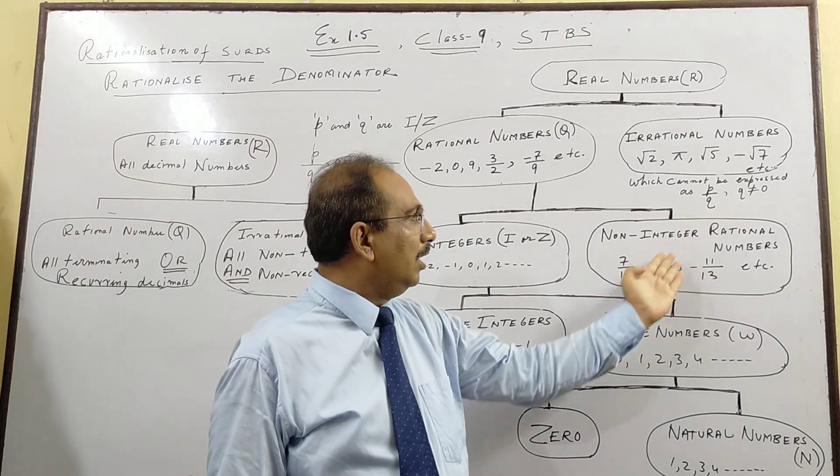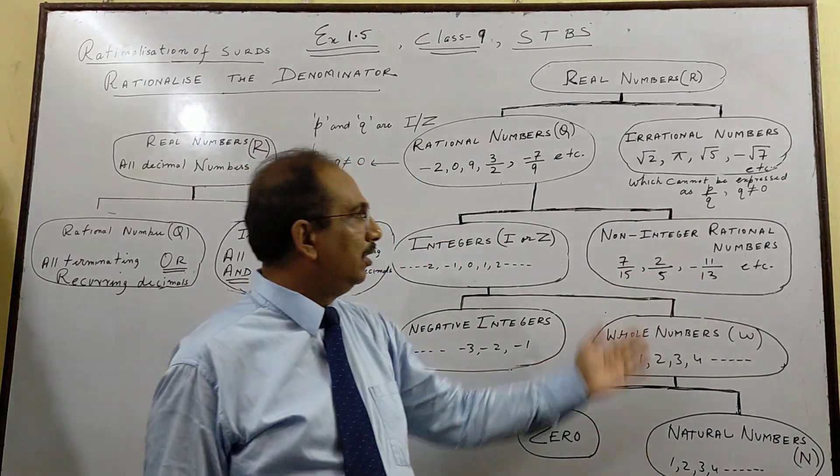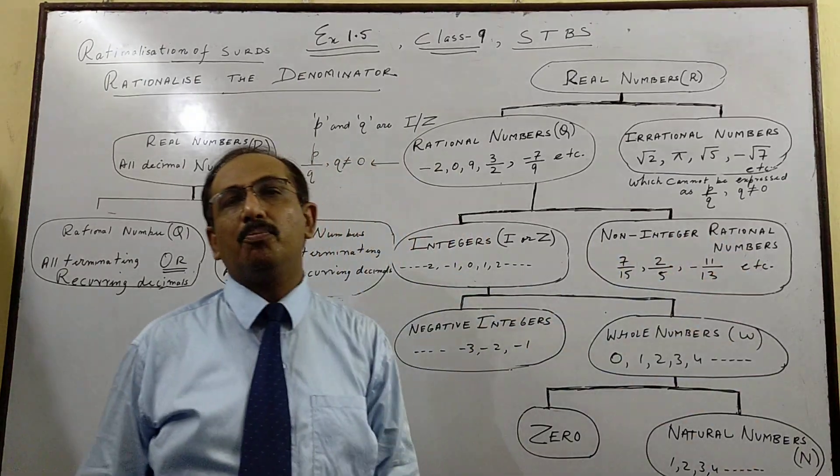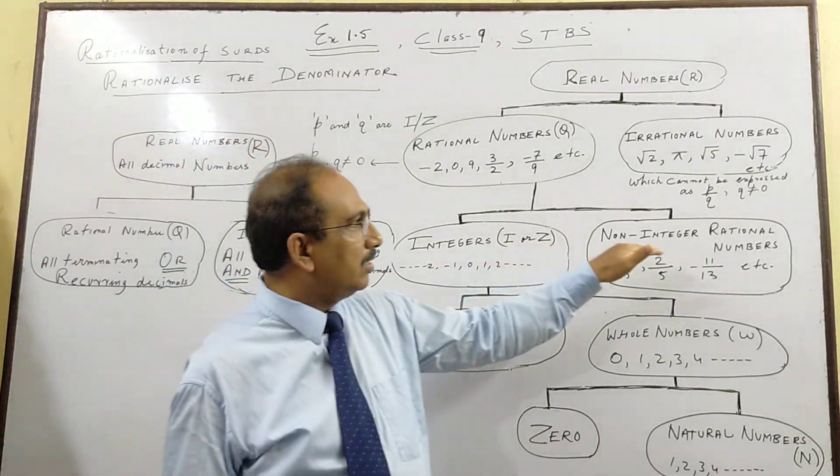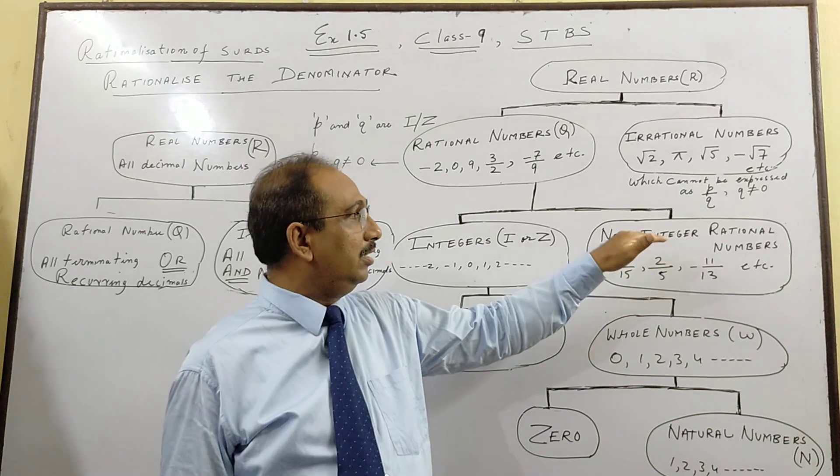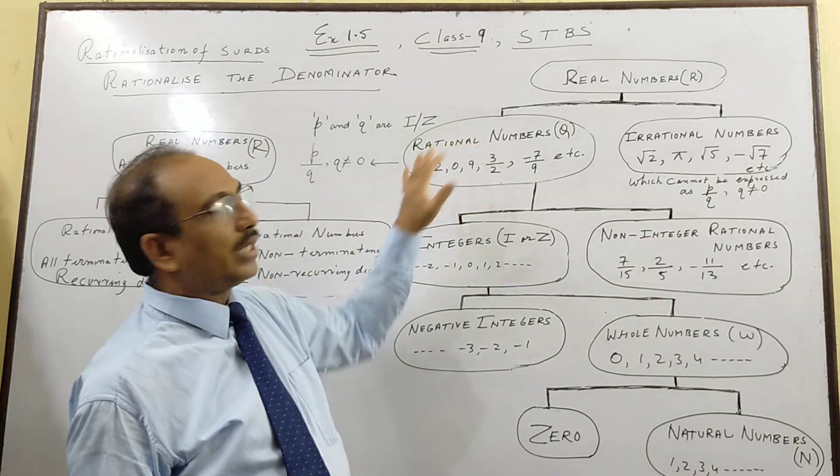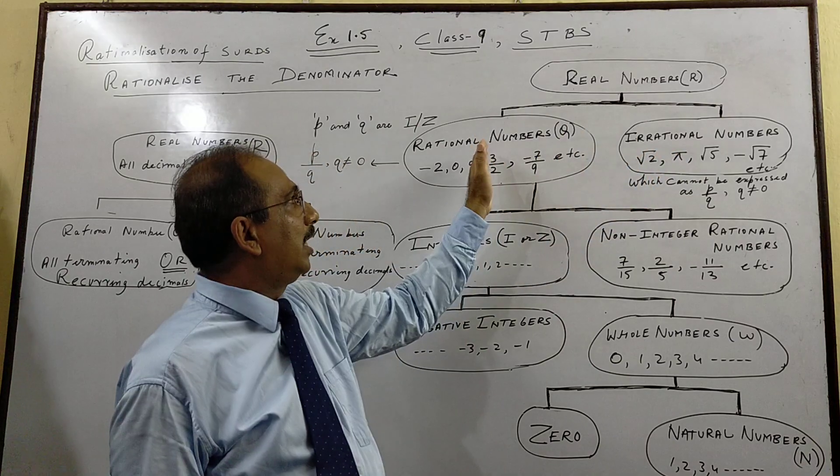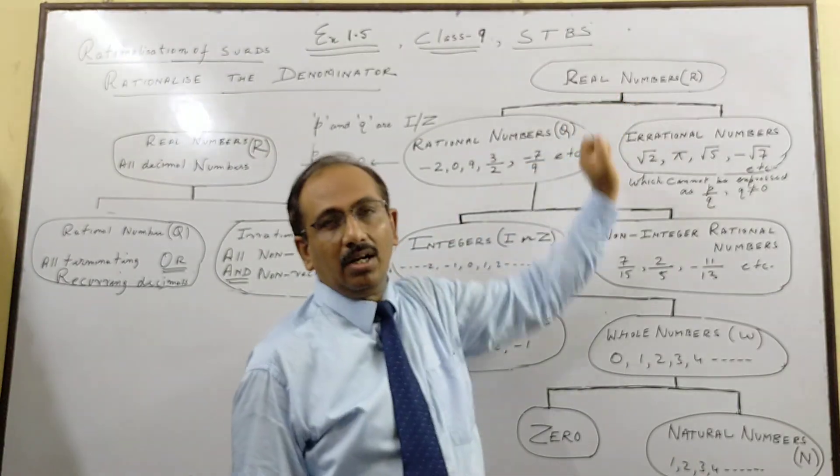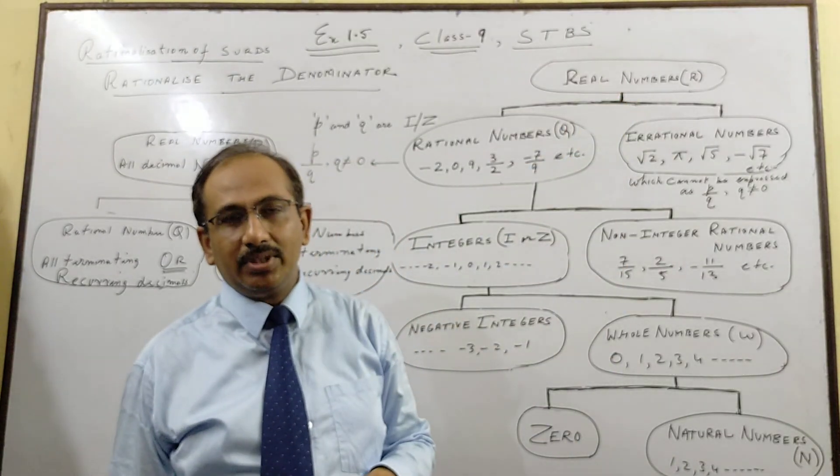Now integers and non-integer rational numbers. I will teach what is rational number. These are basically fractions. Non-integer rational numbers are positive and negative fractions. Next we see integers and non-integer rational number gives you rational number. And together rational and irrational gives you real number.